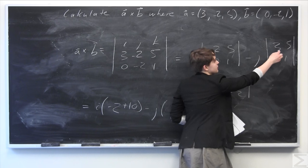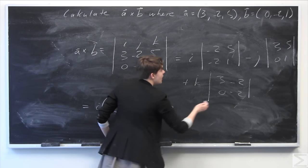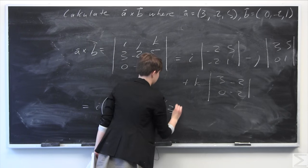Minus j times 3 times 1 is going to be 3. Minus 0 times 5 is just 0, so we're just going to leave this as 3.